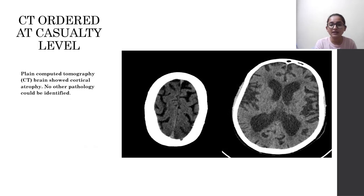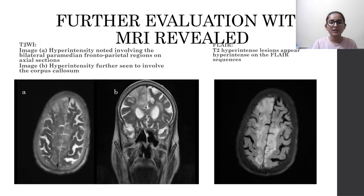CT was ordered at the casualty level and picked up cortical atrophy, with no other pathology identified. Further evaluation with MRI revealed: on T2-weighted images, Image A shows hyperintensity involving the bilateral paramedian frontoparietal regions on axial sections. Image B shows hyperintensity further involving the corpus callosum on coronal sections. FLAIR sequences show the T2-hyperintense lesions also appearing hyperintense on FLAIR.